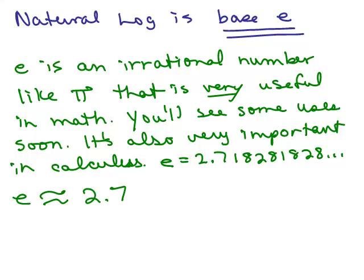So e is about 2.7, and the way we write the natural log is ln. If you put ln of, let's say, 10, that means log base e of 10. Just like the common log where we don't write the 10, for the natural log, we don't write the e. So if you see log base e, the shortcut is to write ln. In books, it usually isn't in script. I like writing in script so it doesn't look like the word 'in'.